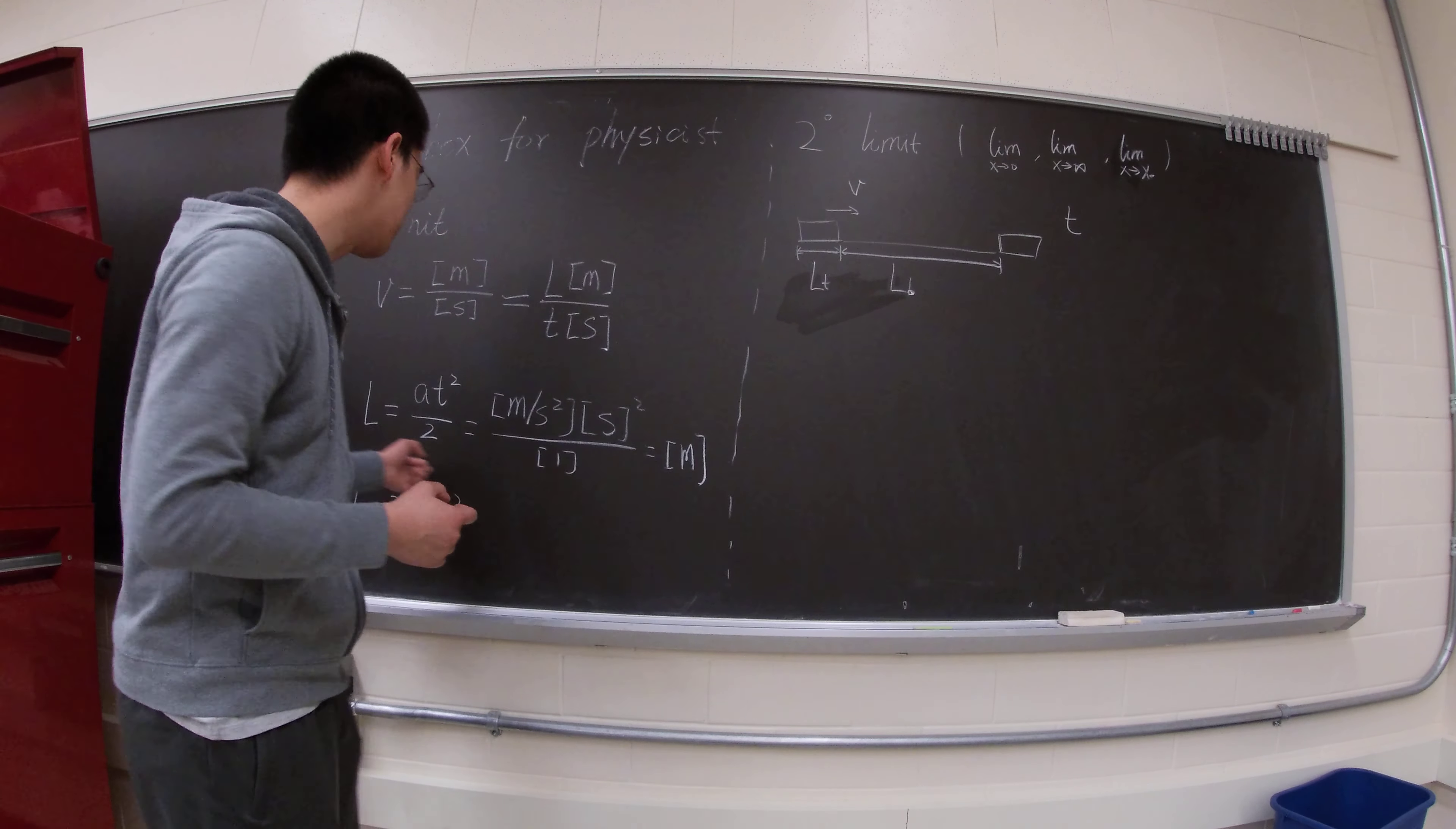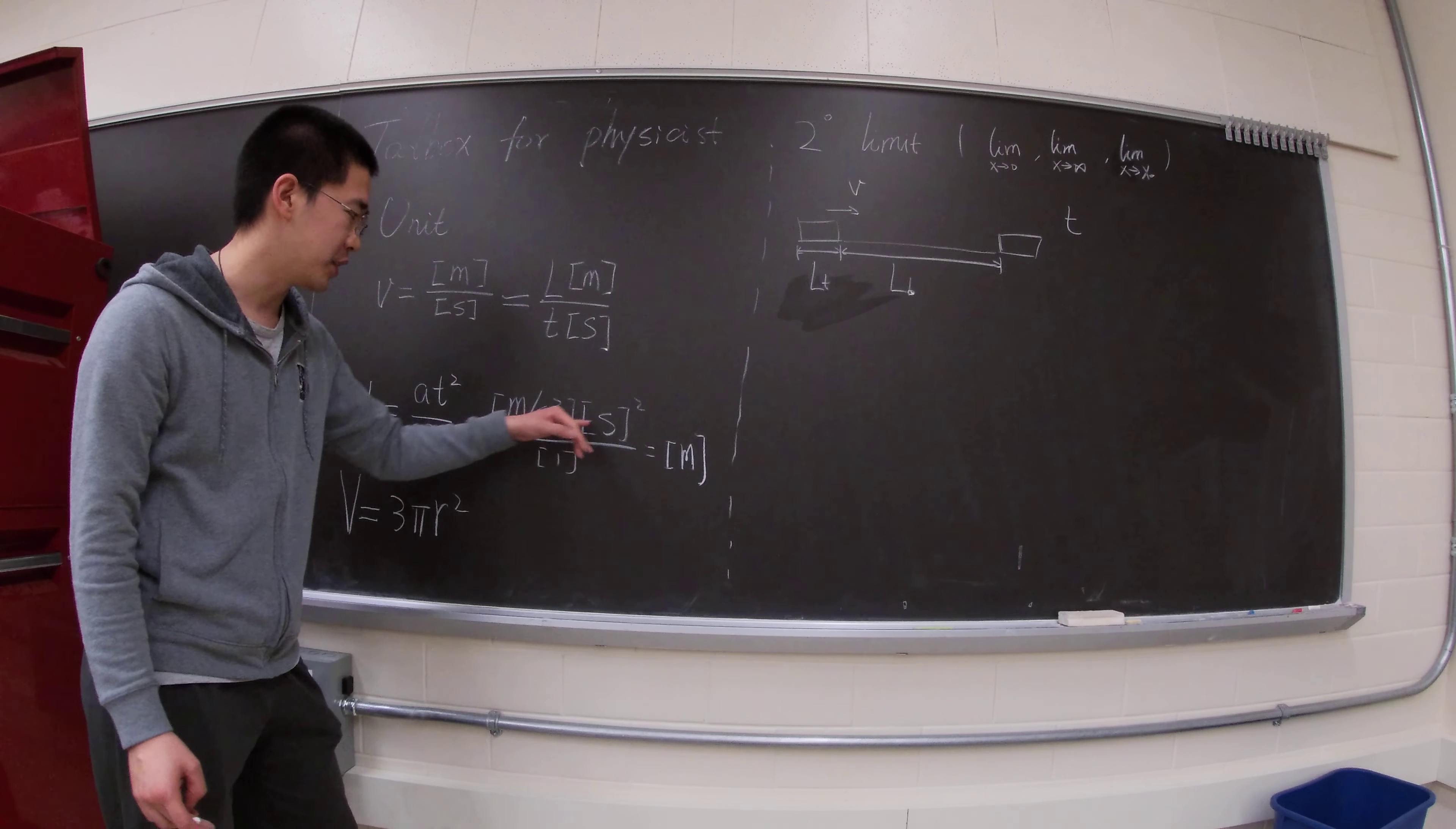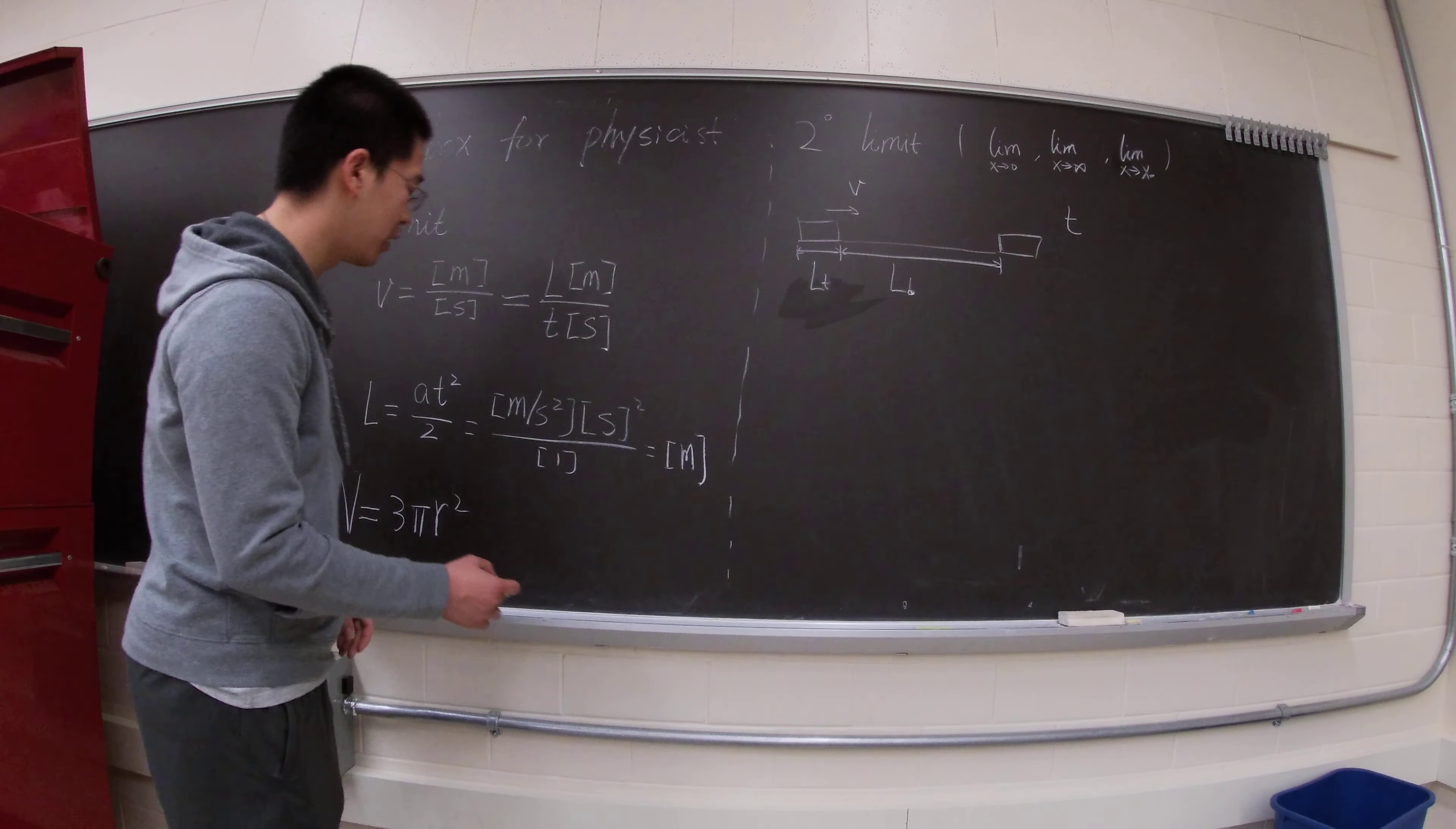For instance, the length, you have the unit of meter. Two, of course, is unitless. And T, time has a time square, so S square. So the unit of A obviously will be M over S square. Just divide this to here. And of course you can see M over S square multiplied by S square.